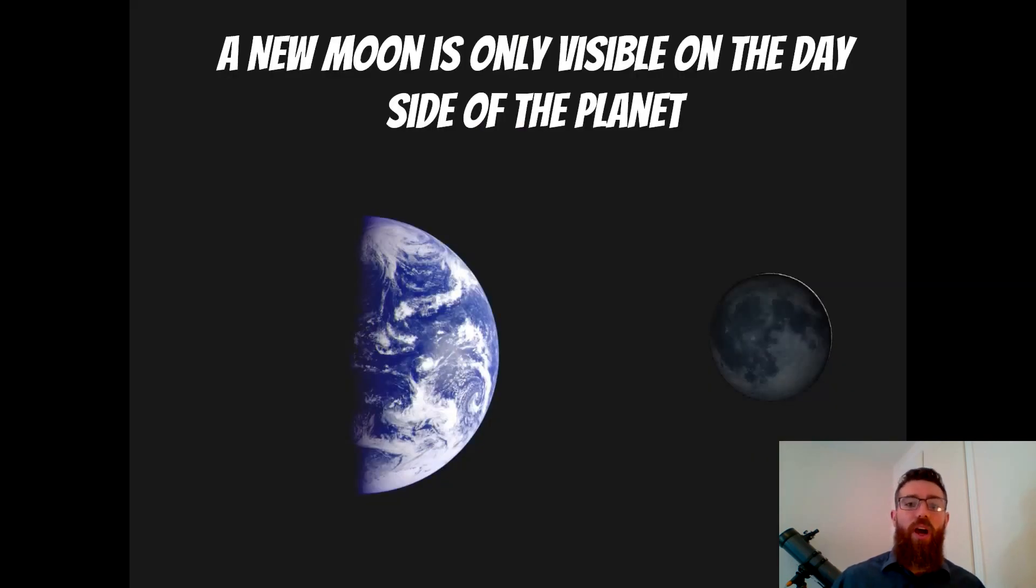A new moon is typically only going to be visible on the day side of the planet for that very reason—because a new moon occurs when it's between the earth and the Sun. When you've got that configuration, that's going to be on the day side of the earth.